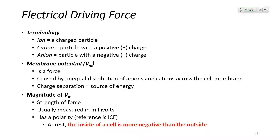We're also going to speak about the membrane potential, represented by Vm. This is a force caused by the unequal distribution of charged particles across the cell membrane. In a similar way that a battery having separate charges creates a potential to do work or energy, having separate charges on either side of the membrane creates this membrane potential. It's really important to understand how we get this membrane potential.